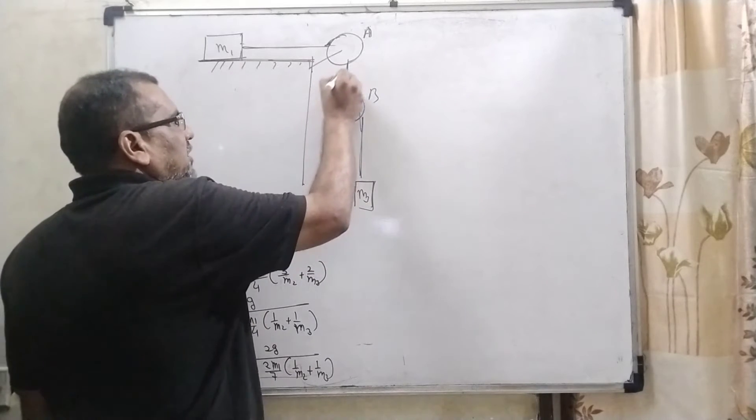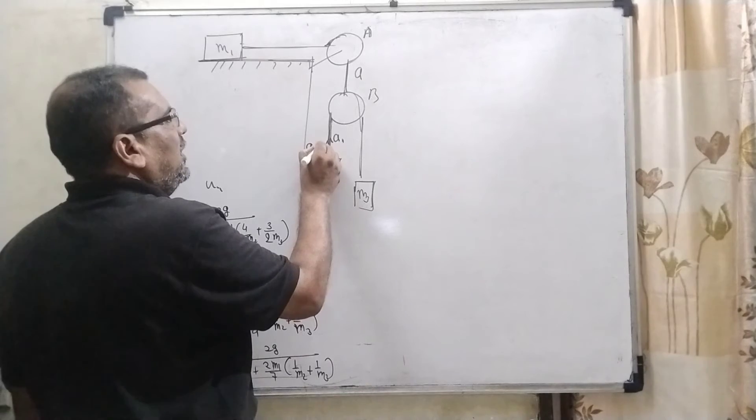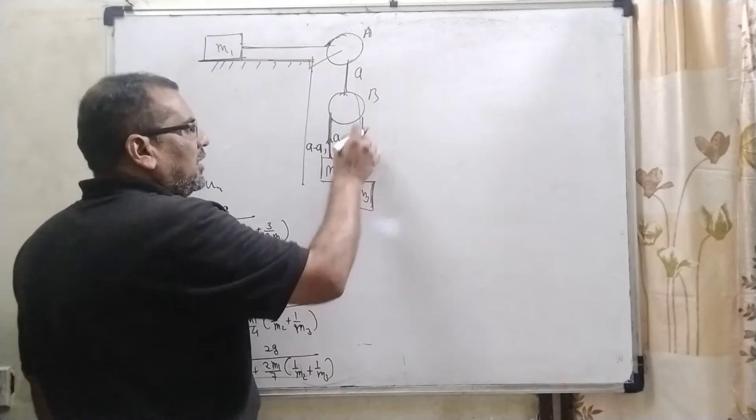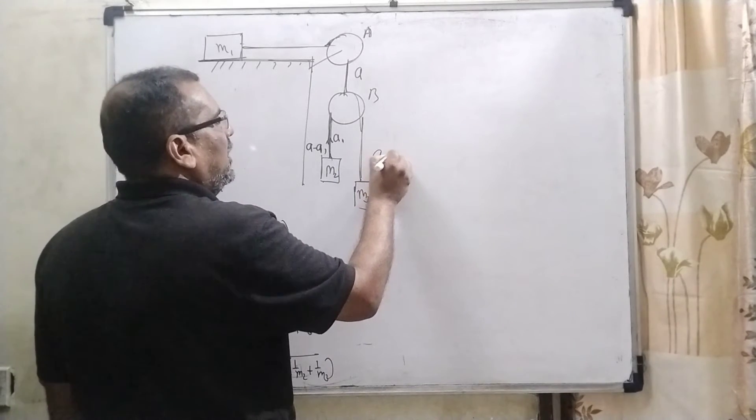But whole system, that acceleration is A. So therefore, net acceleration is A minus A1. And similarly, M3, this is falling downward direction. So net acceleration is A plus A1.